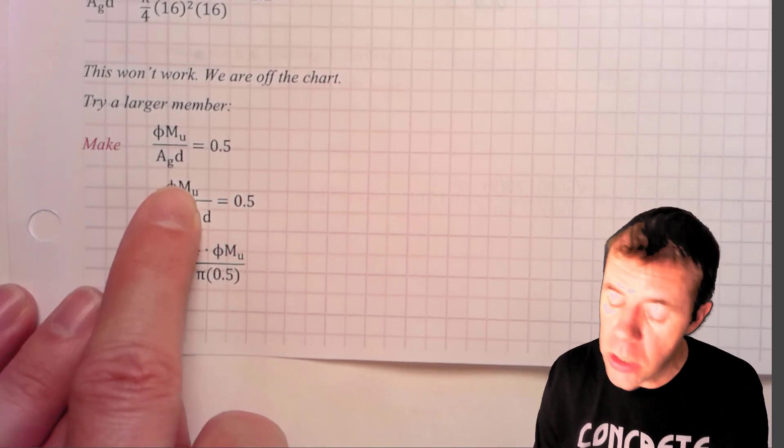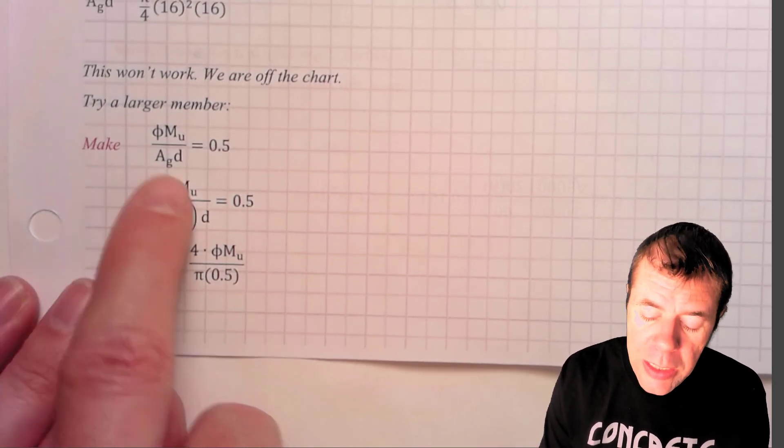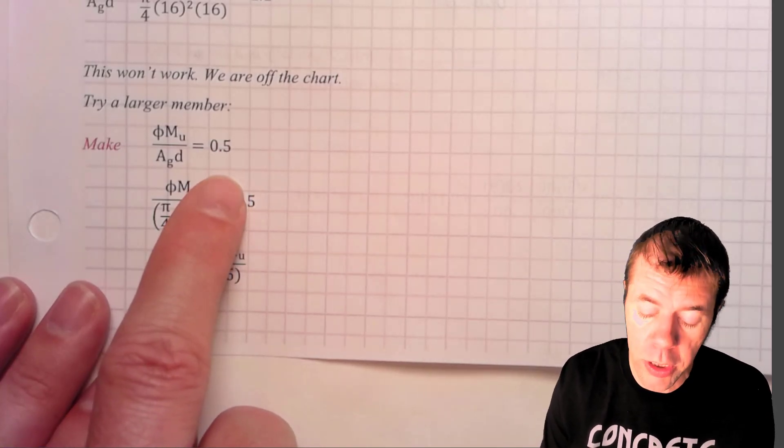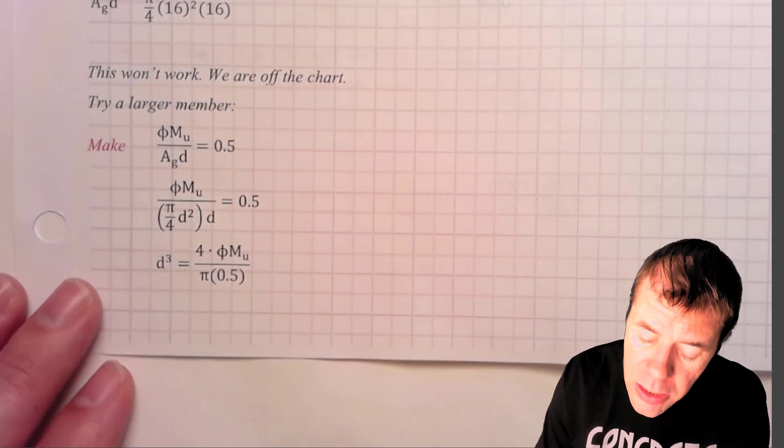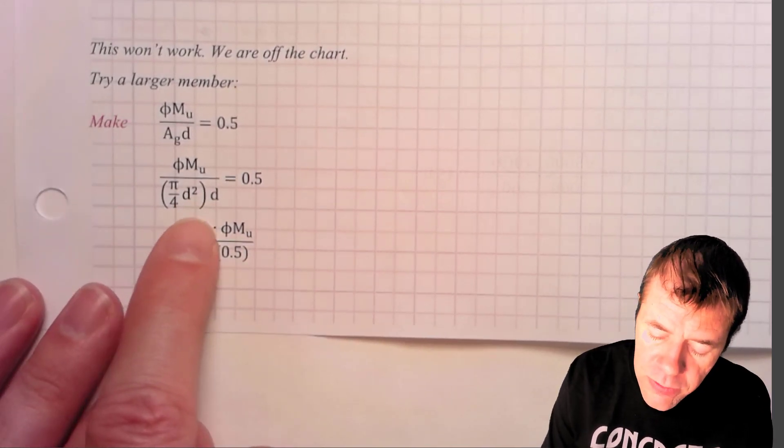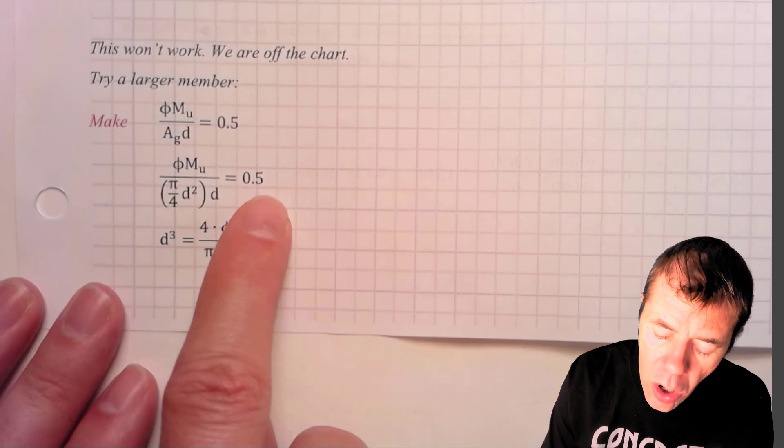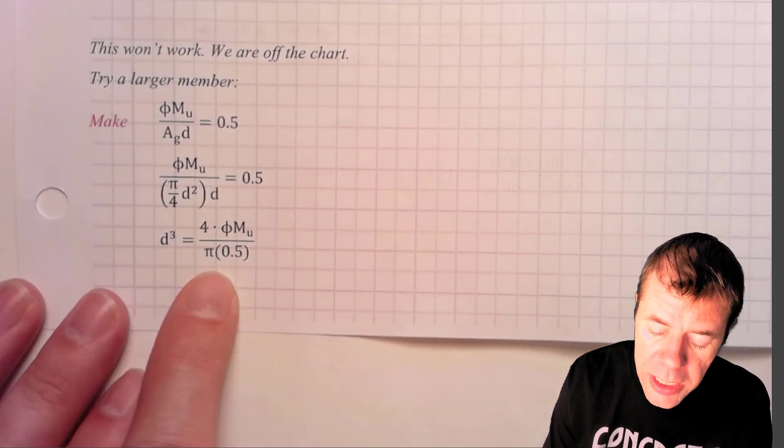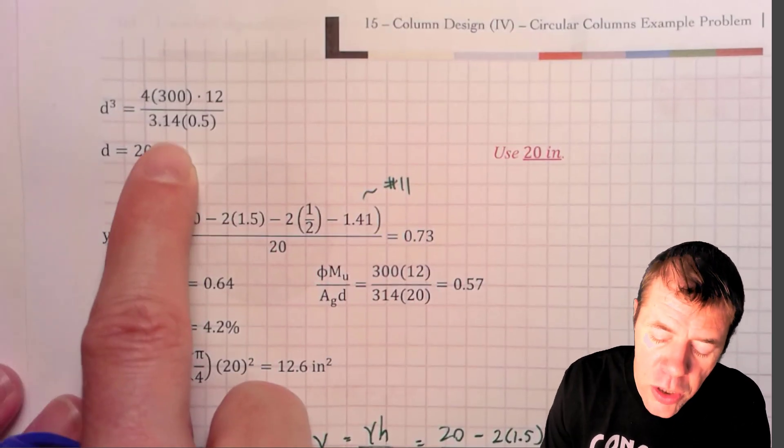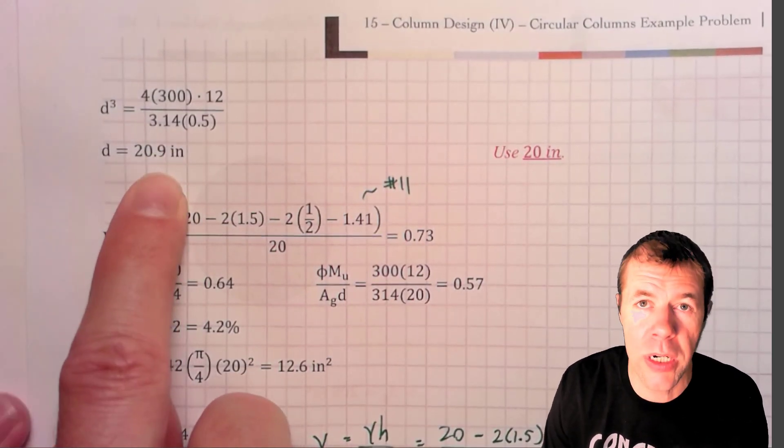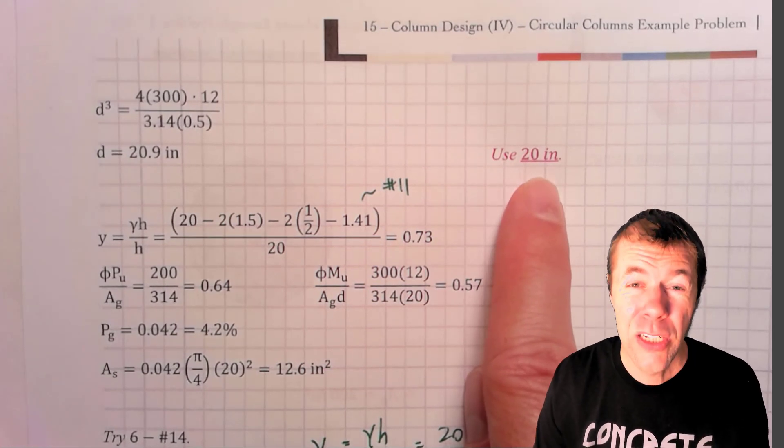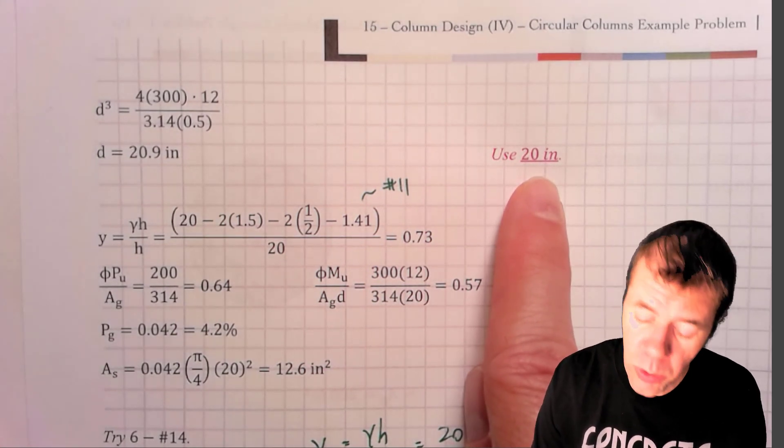When you have moment-dominated columns, you set them equal to about 0.5. If this doesn't work for you, you could use 0.4 or 0.3. We're going to use 0.5 in this case. And we're going to back solve for knowing what the area gross that we need in terms of D squared. And set all of this equal to D cube equals this big monster. And then let's plug in the numbers. The numbers are here. Once I solve this, I get 20.9 inches. And I can round this to 20 inches. I always round to even numbers when it comes to columns.